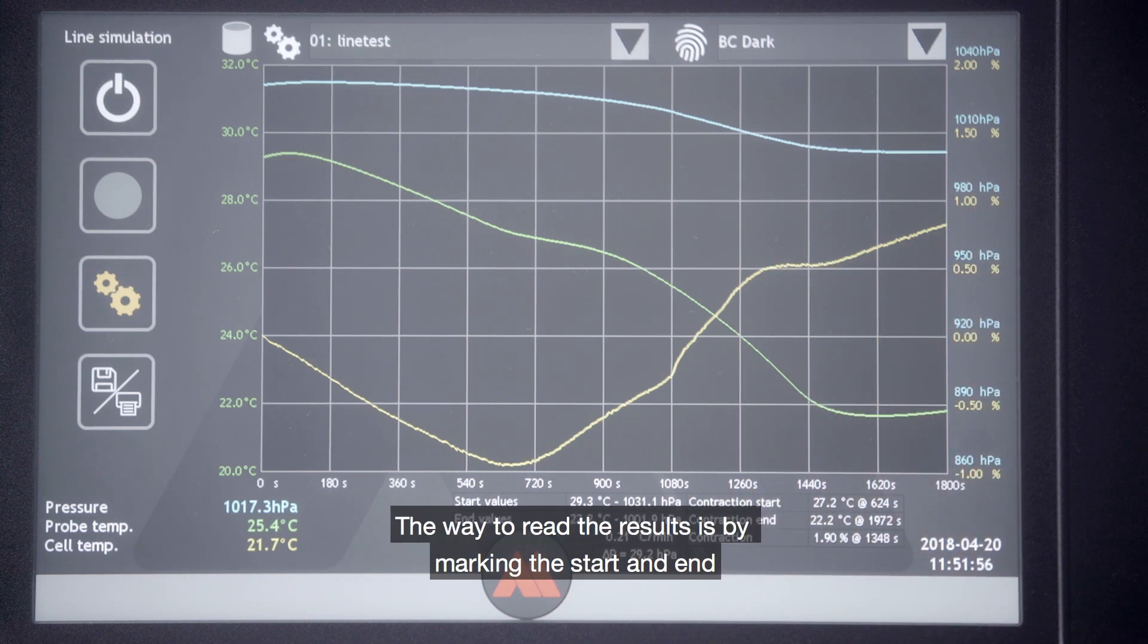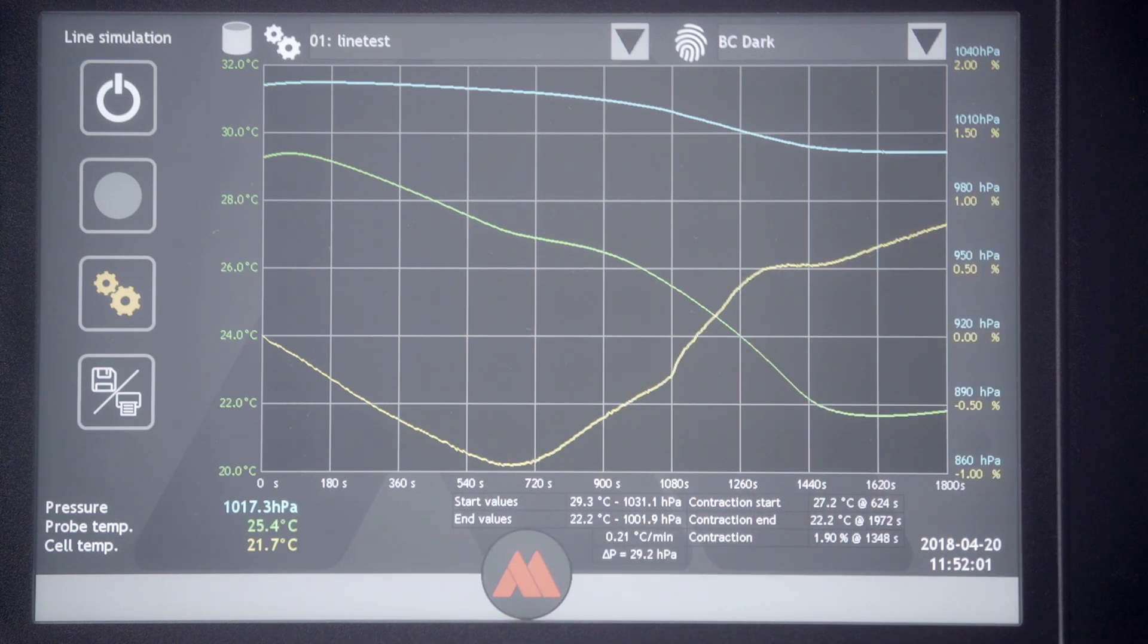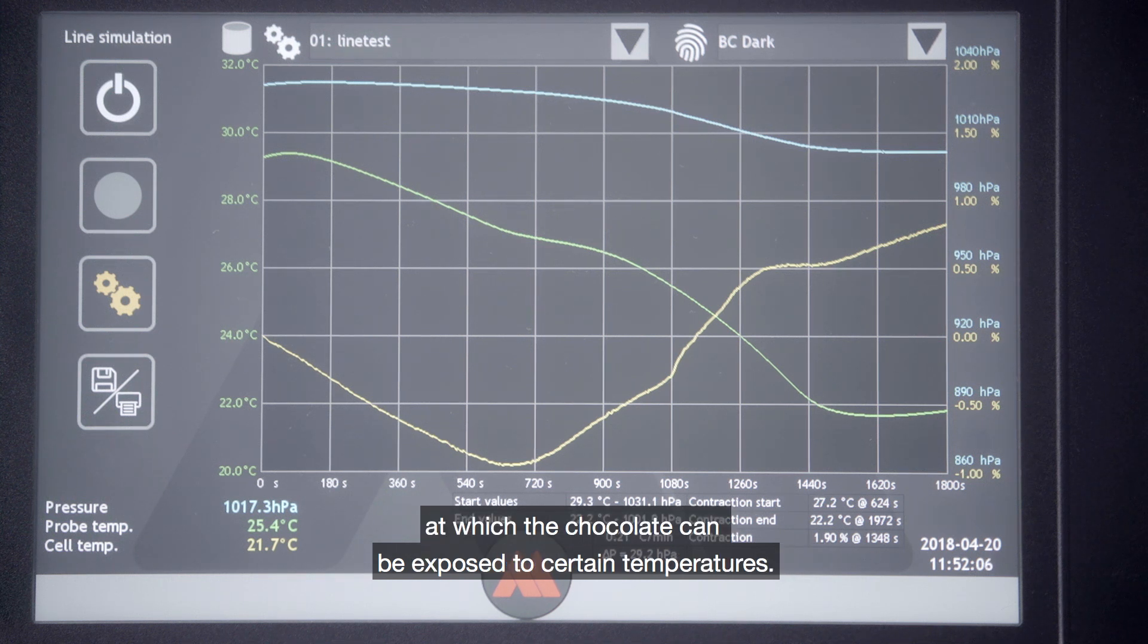The way to read the results is by marking the start and the end of the fluctuating interval of the graph. These points provide the basis for the times at which the chocolate can be exposed to certain temperatures.